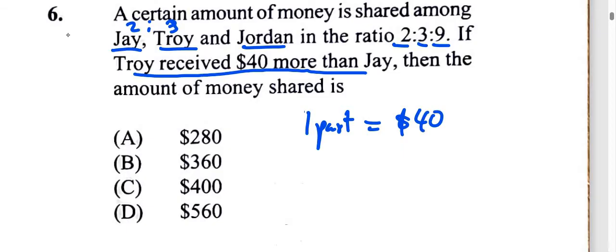So if one part is $40, then the total parts shared altogether is 2 plus 3 plus 9, which is 14 parts.